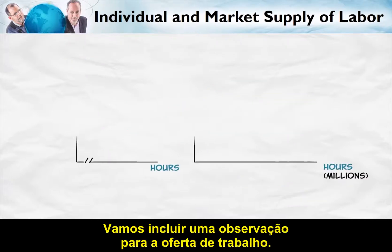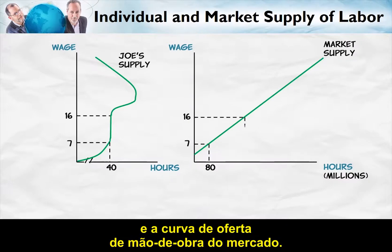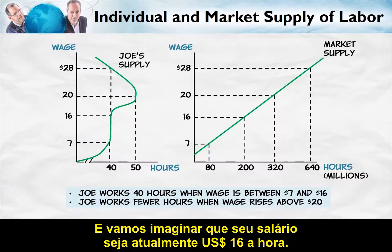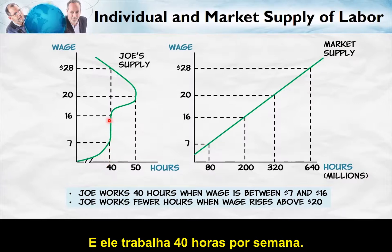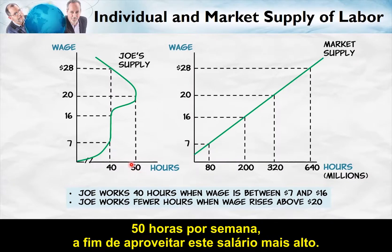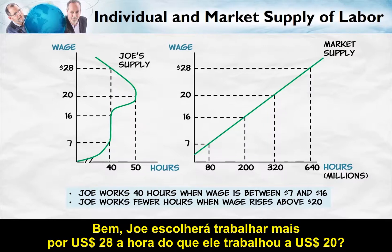Let's add one qualification to the supply of labor. We need to make a distinction between an individual's supply curve for labor and the market supply curve for labor. Suppose we have a janitor — let's call him Joe — and his wage is currently $16 an hour and he's working 40 hours a week. If the wage were to increase to $20 an hour, Joe may decide to work more — 50 hours per week — in order to take advantage of that higher wage. But if the wage increases even more to $28 an hour, will Joe choose to work more than he did at $20? Not necessarily.